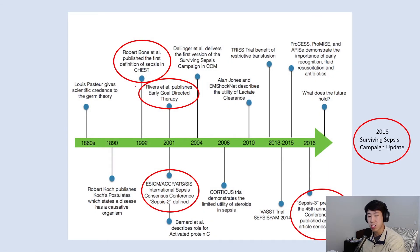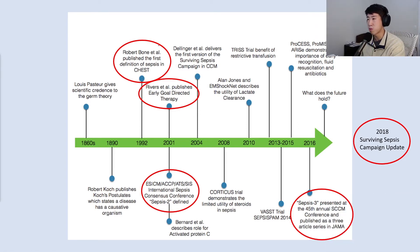Sepsis actually has a pretty long history that has changed through the years, and it really gives a good framework for how we define sepsis nowadays. The most important milestones are 1992, when sepsis was first defined and Sepsis 1 was established, then 2001 when we got Sepsis 2, and finally 2016 when we got Sepsis 3, which is what we are now supposed to be using.